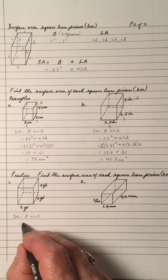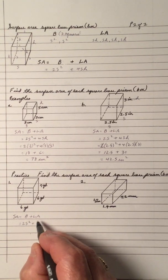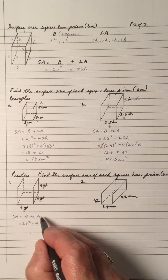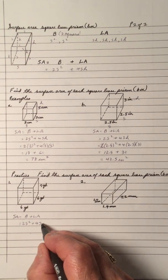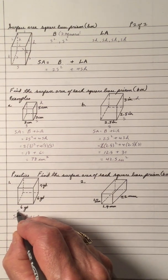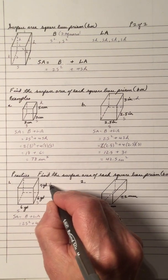So the surface area is base area plus lateral area. The base is a square, so it's 2 of them. And the four sides are the same, and it's S times H. So that's an S, an S, and an H.